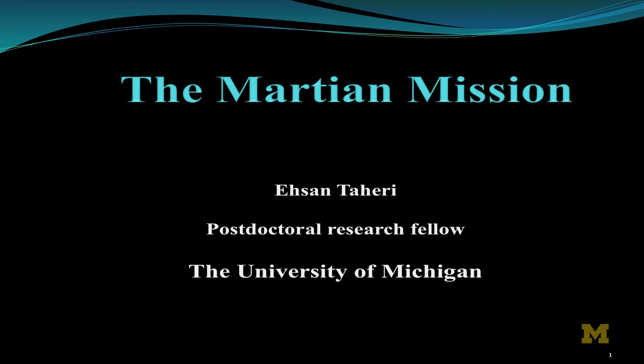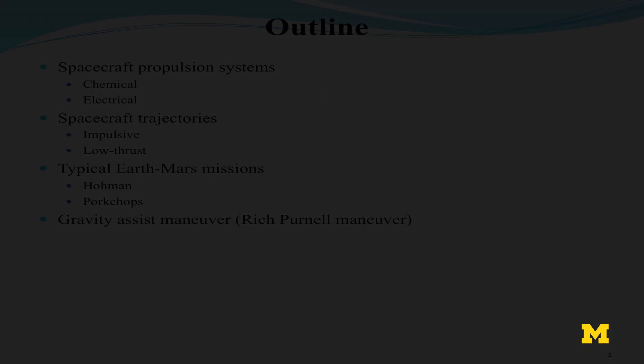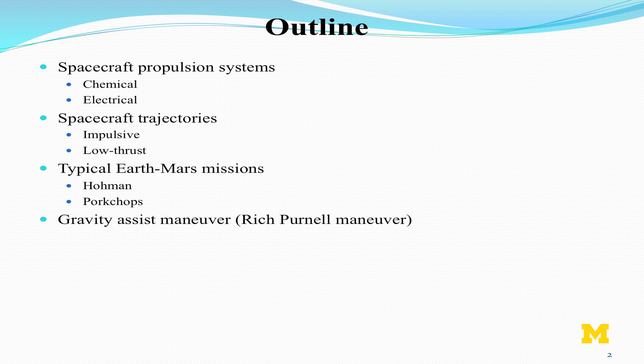I'm going to talk about the Martian mission. First, I have to talk about the propulsion systems that are currently used onboard spacecrafts, chemical and electrical versions. Then I have to talk about the impulsive and low-thrust techniques used in designing trajectories for interplanetary transfers. I'll talk about typical Earth-Mars mission approaches, the Hohmann transfer and pork chop plots. And then I will talk about the gravity-assist maneuver, which is a prelude to the Rich Pernell maneuver used in the Martian mission.